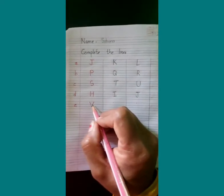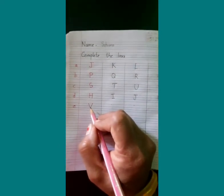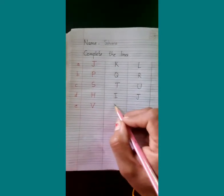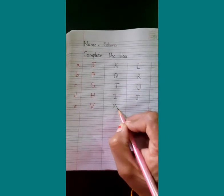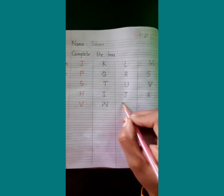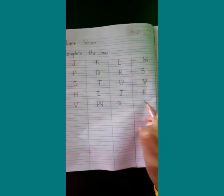Now children, we will say what letter is this? V. After V children we will write W. After W children we will write X. After X children we will write Y.